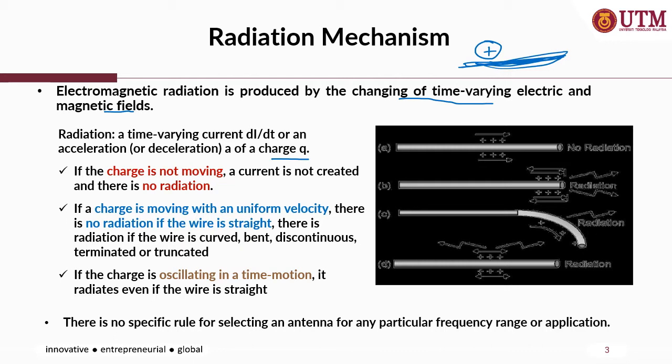By referring to these figures, which basically represent different types of radiation depending on the structure: for a straight wire, if there is charge but the charge is not moving, so there is no current or time-varying electric and magnetic field, therefore no radiation.